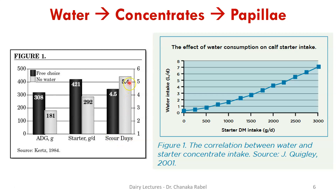This is also a misconception some farmers have — they say giving more water causes diarrhea, but you can clearly see that is not the case here. A 2001 experiment showed that the more water a calf drinks, the more calf starter the calf consumes — up to about three kilos. This is because calf starter is dry feed; if the animal physiologically feels it doesn't have enough water, it won't eat calf starter.